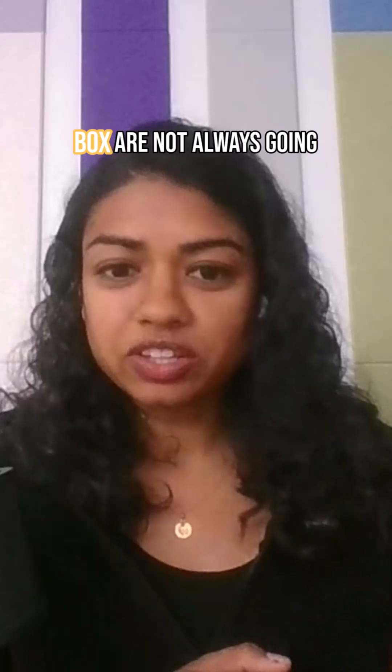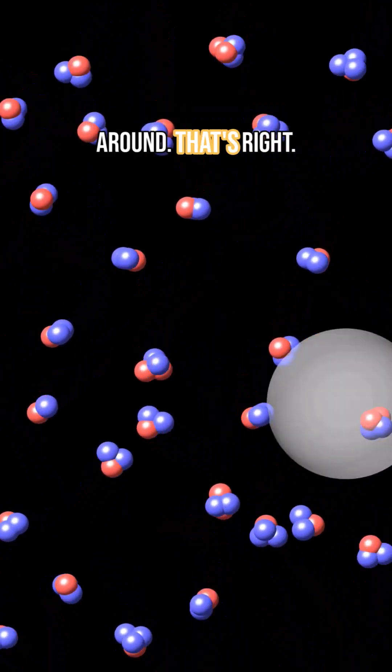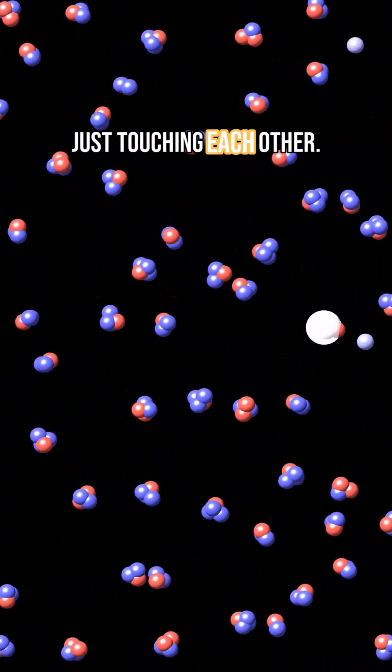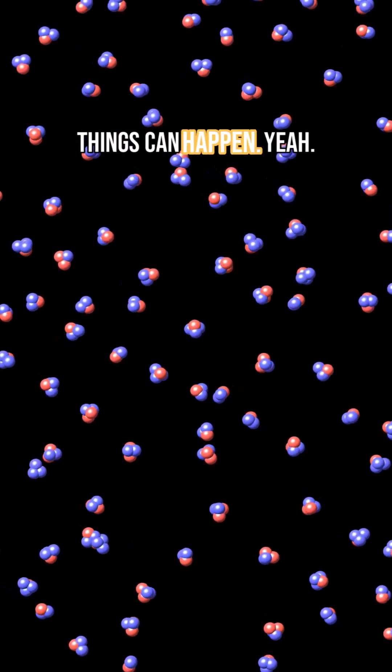But the molecules in the box are not always going to collide with each other head on. They have this 3D space that they're moving around in. They're going to graze on each other sometimes, just touching each other. Many things can happen. They can ricochet off of each other.